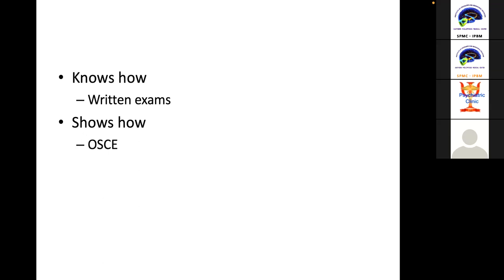First, at the level of PGI, fourth year clerks and residents, we must actually measure expectations — what the learners know how or know what. We want to measure the extent of knowledge, the stock knowledge that the learner has gained from the expected timeframe, like half a year or the whole year. If we want to measure knowledge, we will have written exams. Next is skills evaluation, measured through OSCE. But for now, we will just focus on written exams.